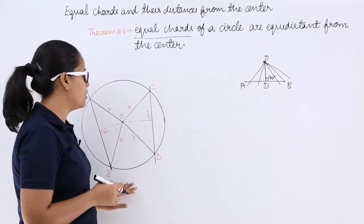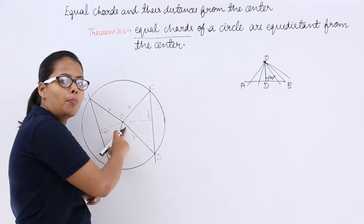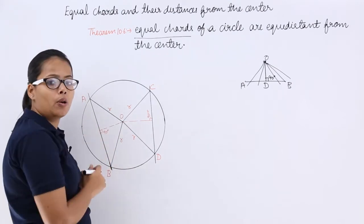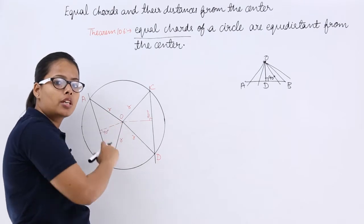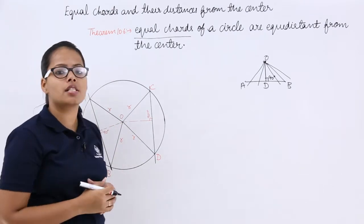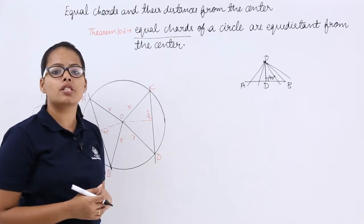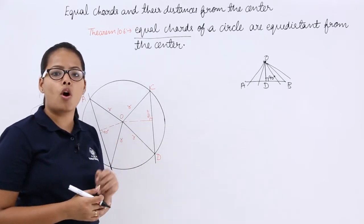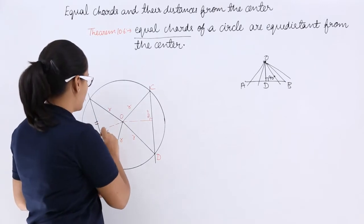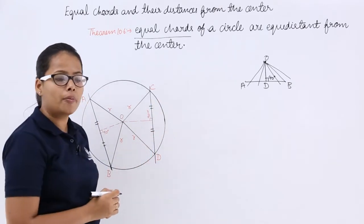So, to calculate the distance between a point and a chord, you will draw a perpendicular from the center of the circle on this chord. This perpendicular will bisect the chord, and similarly here, it will bisect this chord as well.